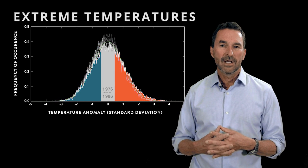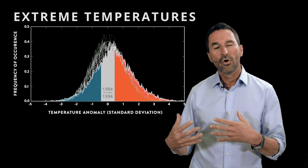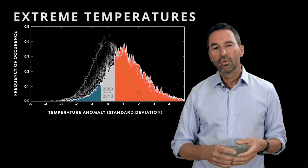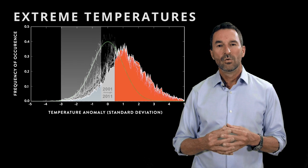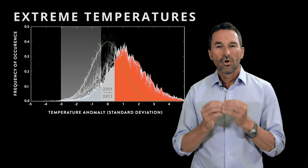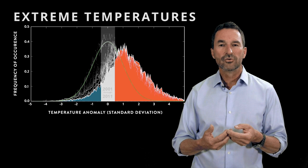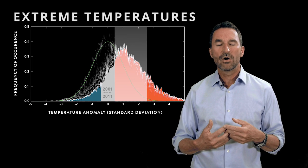But as time went by and climate change began to have an impact, the whole range moves to the right. And so today, only one in twelve winters is colder than normal. Only two in twelve years are normal. And eight in twelve years are now hotter than normal.